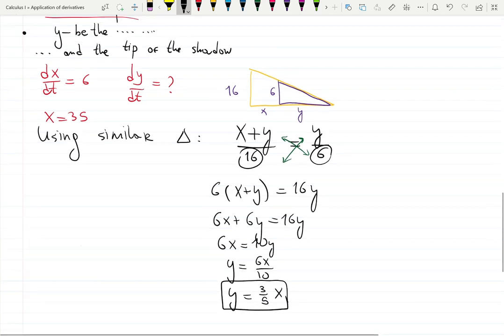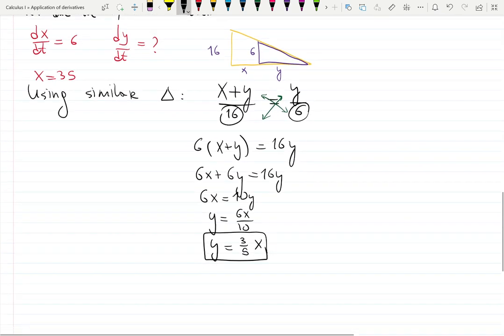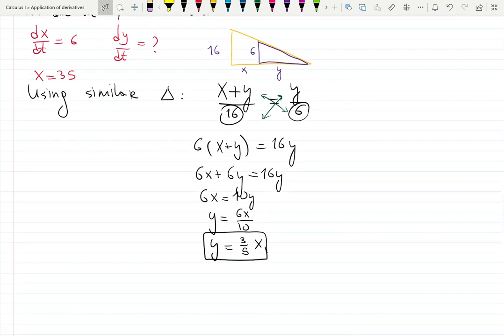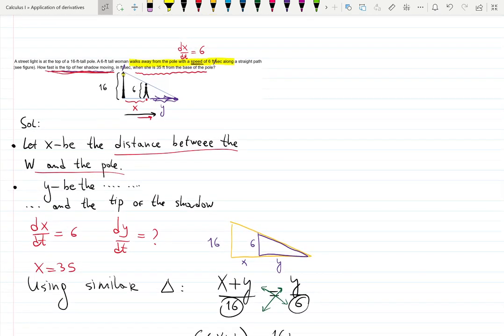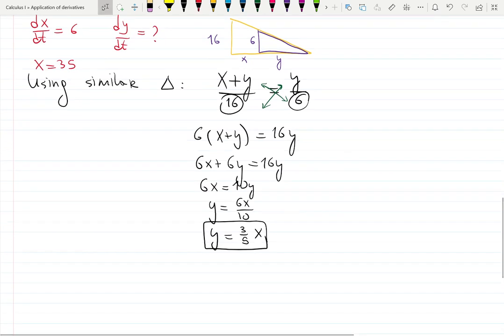Finally I want to find the derivative of what? So I want to find the derivative of x plus y, because that's where the whole thing is happening, right? That's how fast the shadow is moving away from the pole. That's what they want us to know.